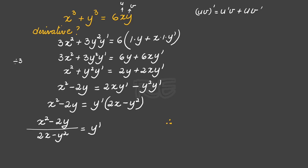In conclusion, y prime is equal to x squared minus 2y divided by 2x minus y squared.